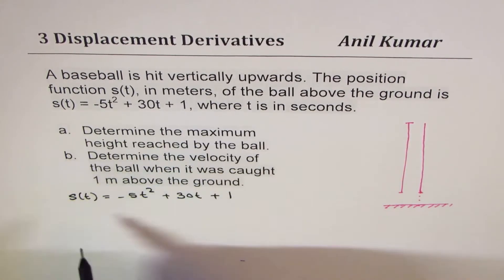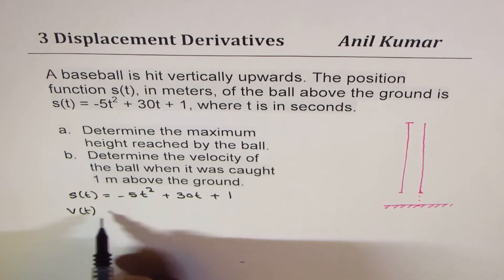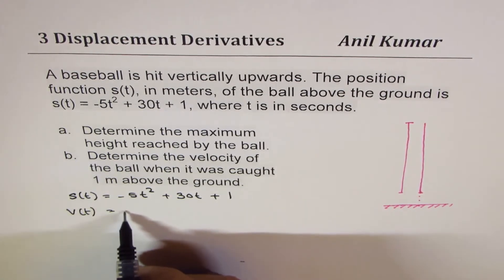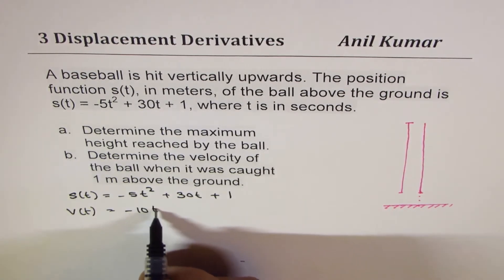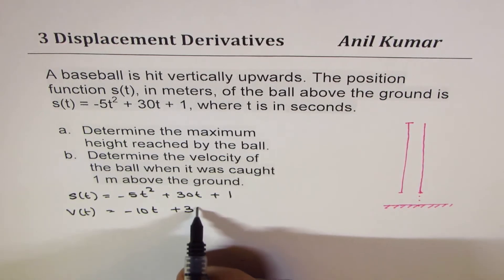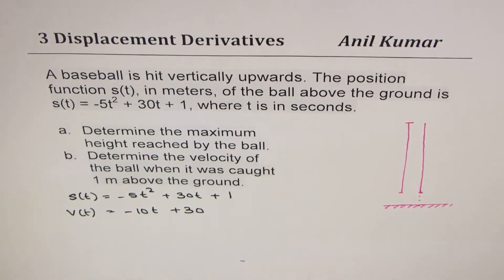Let's find the velocity. Velocity is the derivative of this height. So it gives us -10t + 30. So that becomes the expression for velocity.